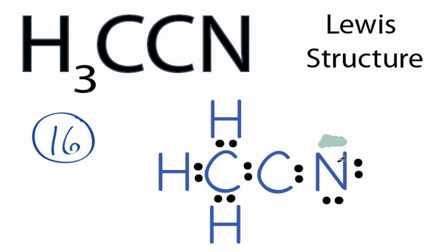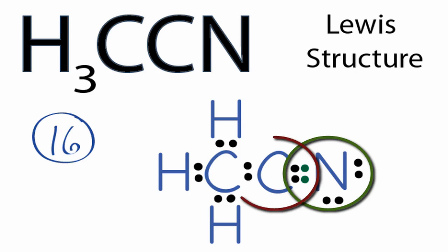We can share these two valence electrons here to form a double bond, and now the nitrogen still has eight valence electrons, but that carbon has six valence electrons, so we're getting close.